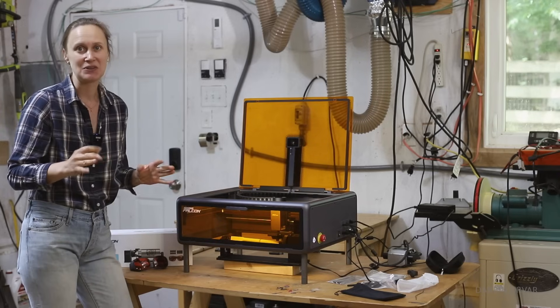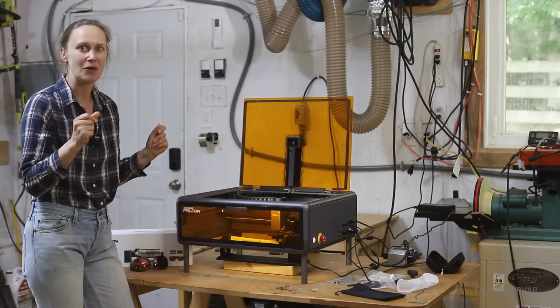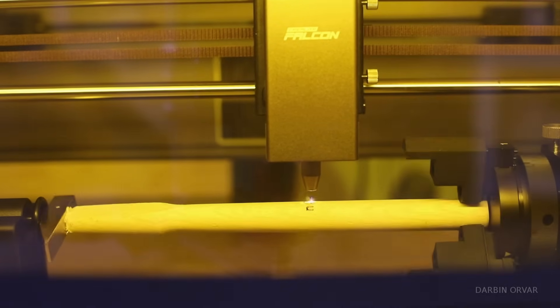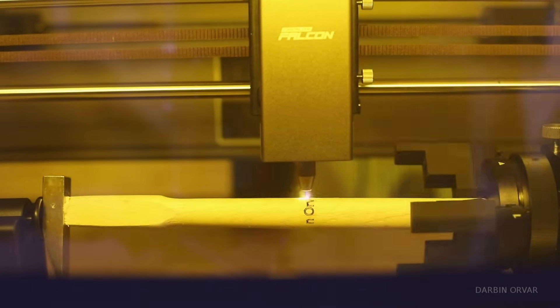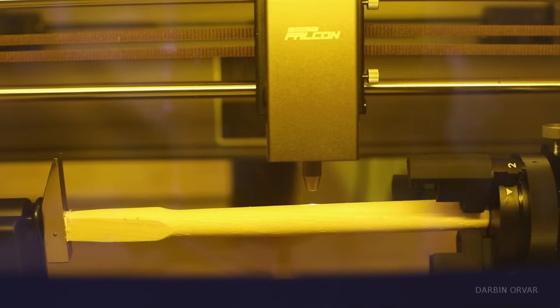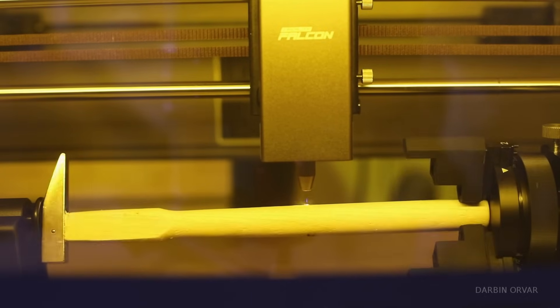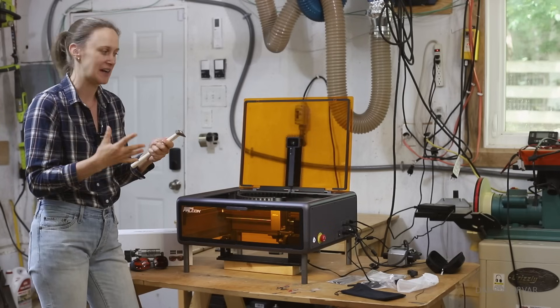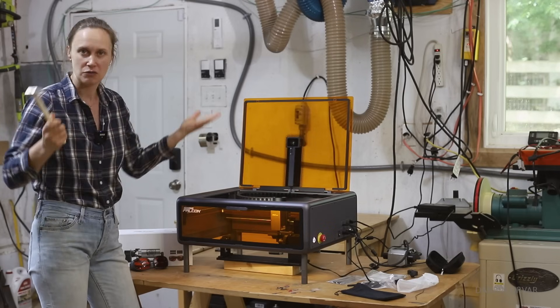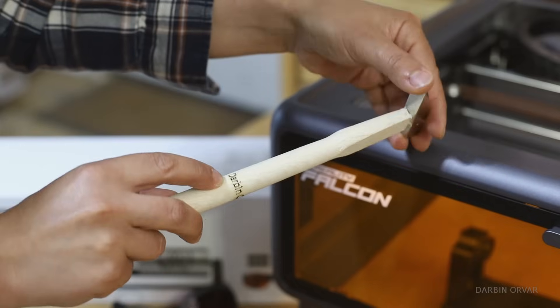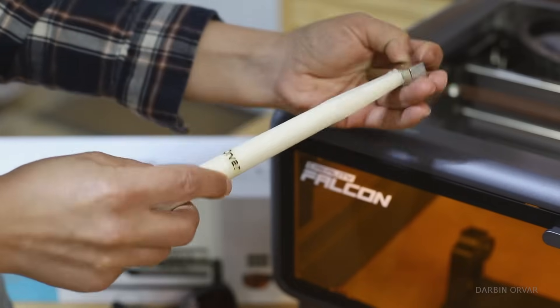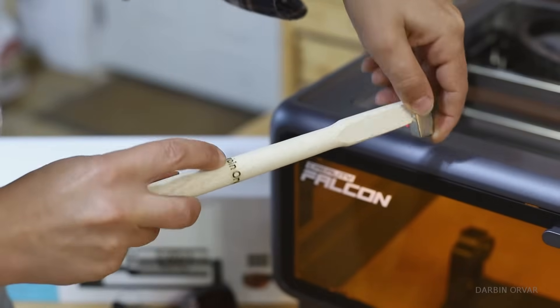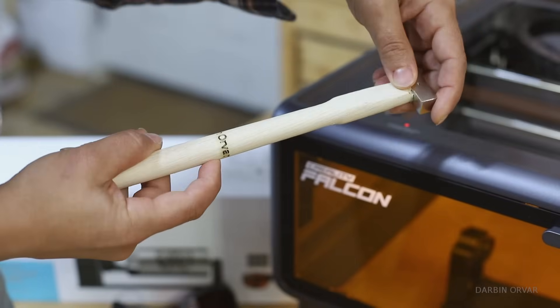I like to engrave things for my business. I put the logo, my brand name, on different things. Here's a hammer, for example, I just engraved with Darbin Orvar on here. This is kind of fun, I think, to be able to put your logo or whatever design you want on things that you use and that you sell. So here we have Darbin Orvar this way. Of course, you can also engrave it the other way if you want, but it's nice that you can go all the way around.